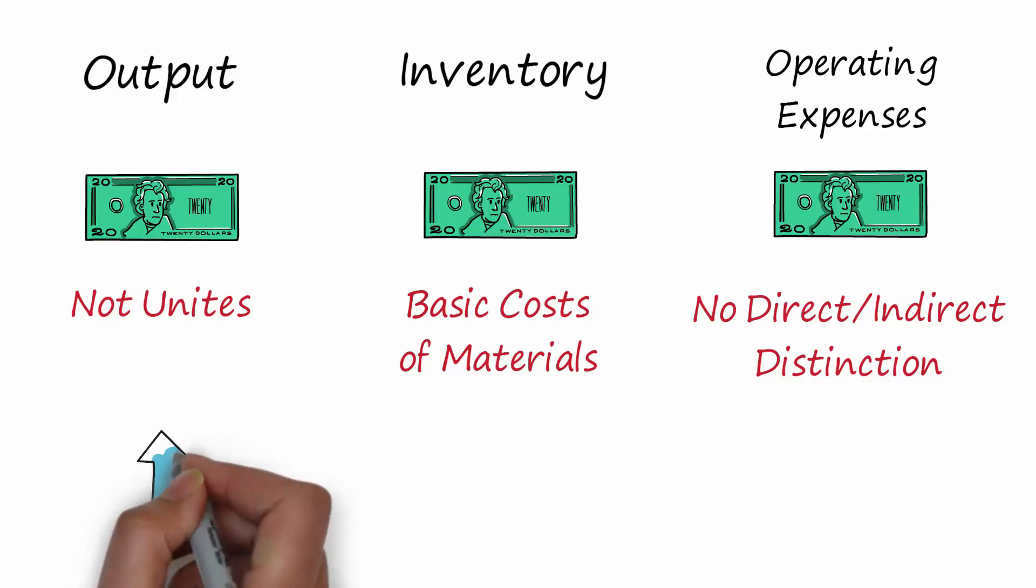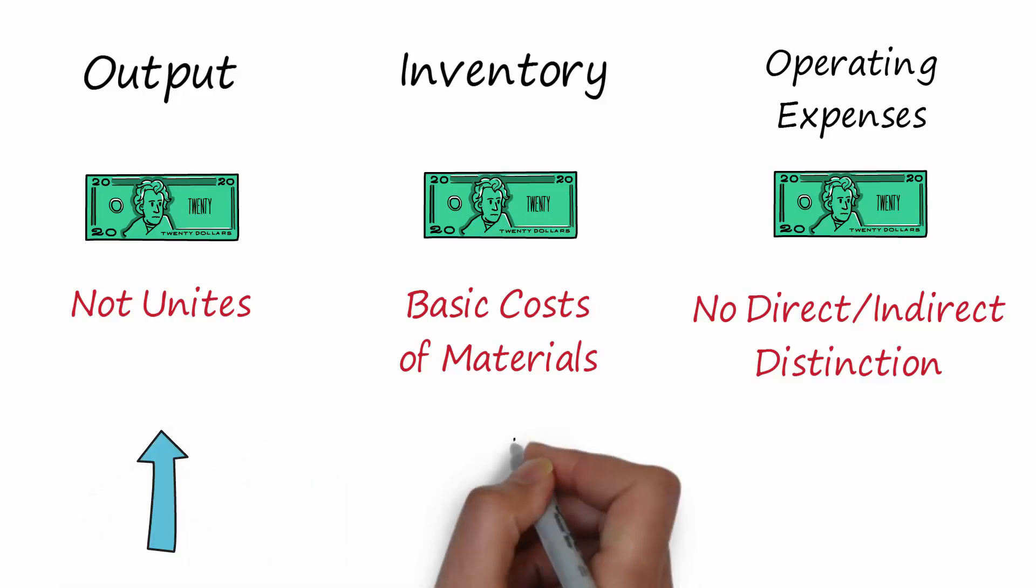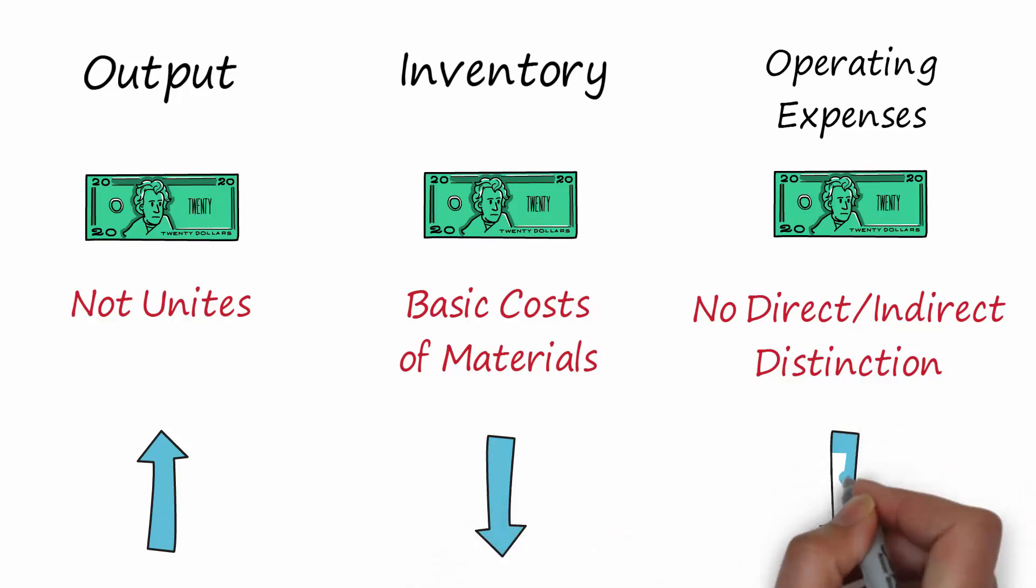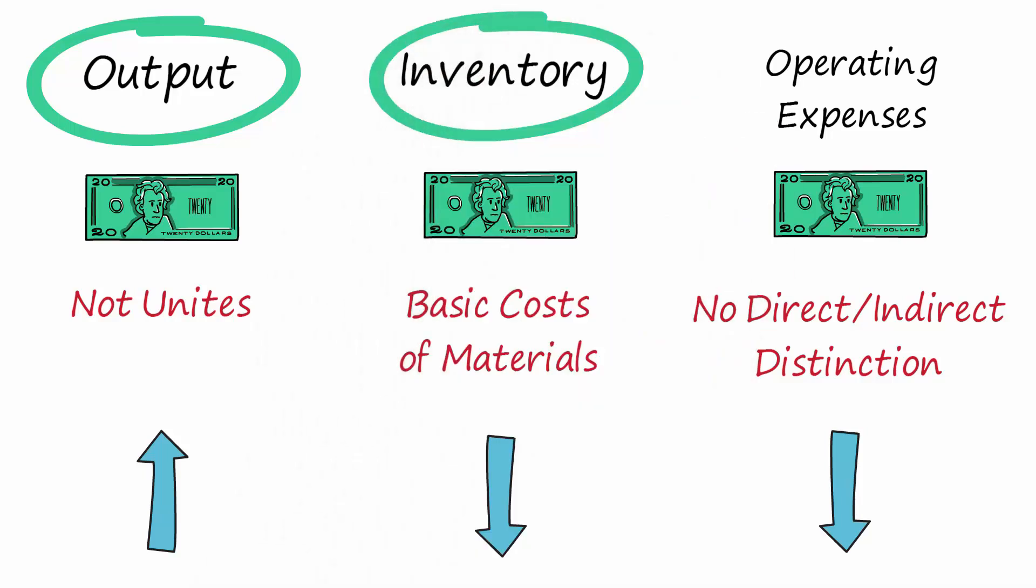Once these concepts are fixed, the purpose of a company becomes simple: Increase output and lower inventory level and Operating Expenses. Every investment and every improvement proposal should be judged by analyzing the impact on these three metrics.